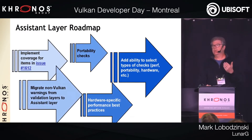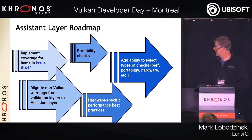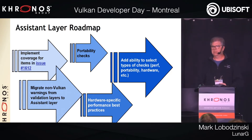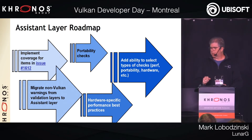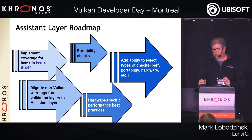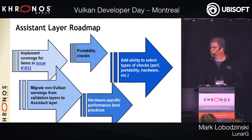In the near future, we want to add more coverage to the requested list of items. Right now there are many warnings in the validation layers that are not defined in the spec — a leftover from the early days. Over time the number of warnings in the spec has decreased, and it's our goal to get all of those non-specified warnings out of the validation layers and into the assistant layer. Things about transitions, performance warnings, and many different kinds of warnings will move into this layer eventually.